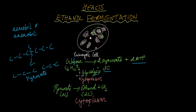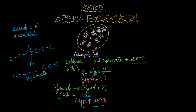Glycolysis takes place in the cytoplasm only, and pyruvate also undergoes the next process in the cytoplasm itself. In the ethanol fermentation process, the three-carbon pyruvate is converted to two-carbon ethanol, and the additional carbon is released as carbon dioxide. This is why yeasts are commonly used in the baking and brewing industry.